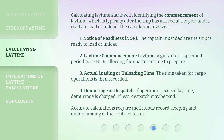Calculating laytime starts with identifying the commencement of laytime, which is typically after the ship has arrived at the port and is ready to load or unload. The calculation involves: one, notice of readiness (NOR) — the captain must declare the ship is ready to load or unload; two, laytime commencement — laytime begins after a specified period post-NOR, allowing the charterer time to prepare; three, actual loading or unloading time — the time taken for cargo operations is then recorded; four, demurrage or dispatch — if operations exceed laytime, demurrage is charged; if less, dispatch may be paid. Accurate calculations require meticulous record keeping and understanding of the contract terms.